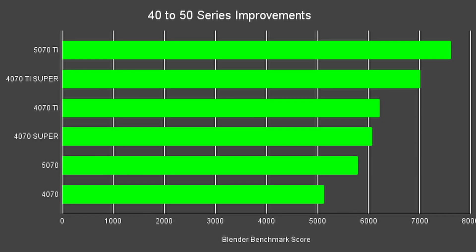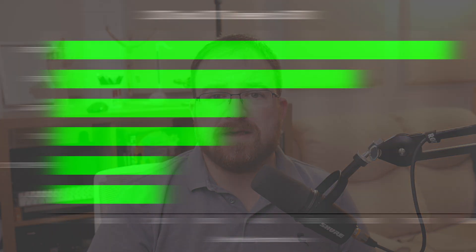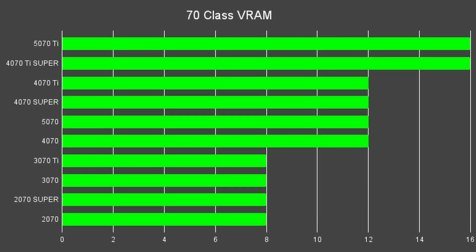What about the earlier generations? While the boost from the 40 series isn't that much due to the node shrink from previous generations, there's a much bigger jump from the 30 and 20 series cards. From the 3070, it's 142% faster. The 3070 Ti — 118% faster. And there's a whopping 270% increase in speed from the 2070. Not to mention, across all of these, the doubling of VRAM from 8GB to 16GB.